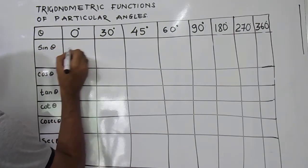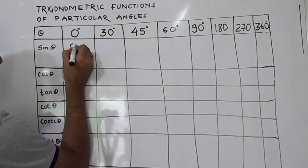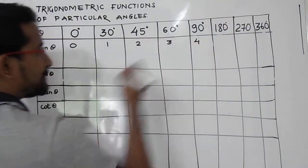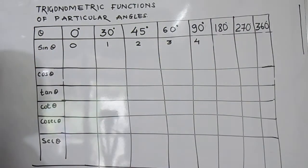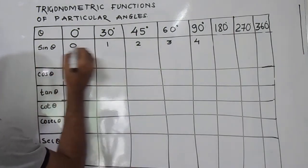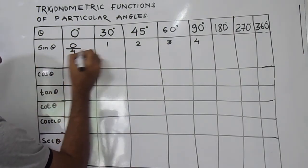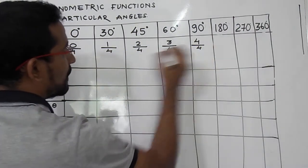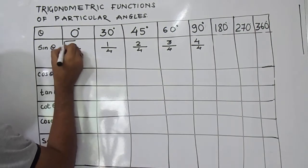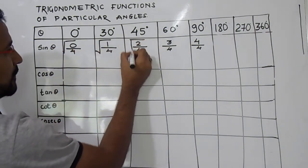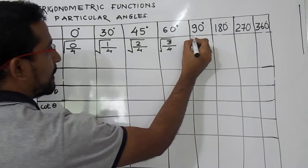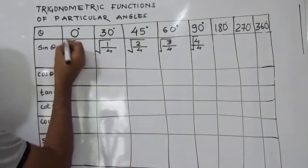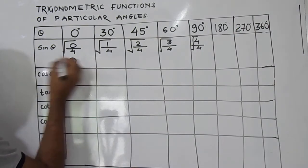For sine values, first write 0, 1, 2, 3, and 4. Then divide all these values by 4. Now take the square roots. So 0 divided by 4 is 0, and the square root of 0 is 0. So sine 0° is 0.